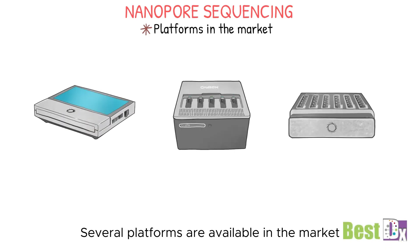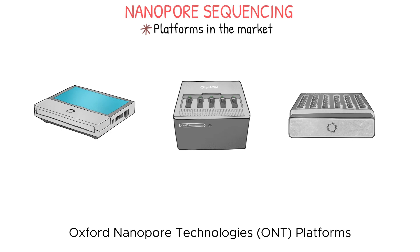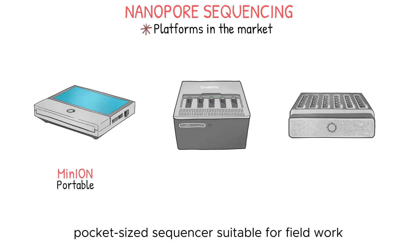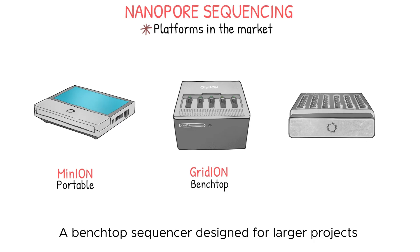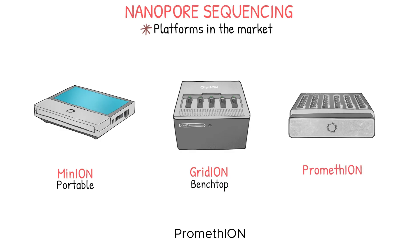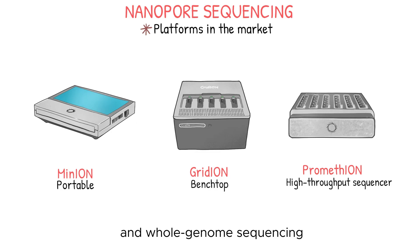Several platforms are available in the market, each with its unique features and capabilities. Oxford Nanopore Technologies platforms: MinION, a portable pocket-sized sequencer suitable for fieldwork and small-scale projects; GridION, a benchtop sequencer designed for larger projects and higher throughput than MinION; and PromethION, a high-throughput sequencer for large-scale projects and whole-genome sequencing.